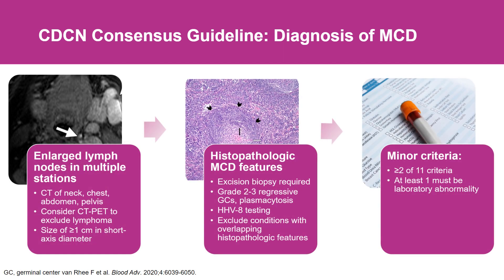Alternatively, in order to make the diagnosis of multicentric Castleman disease, patients need to have multiple regions of enlarged lymph nodes — so disseminated lymphadenopathy. They need a lymph node biopsy performed to determine whether those lymph nodes have features consistent with multicentric Castleman disease: atrophic germinal centers, increased plasma cells, and increased vascularity.